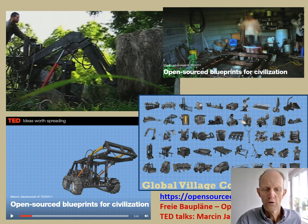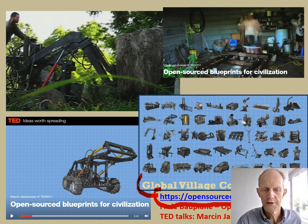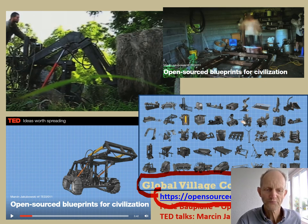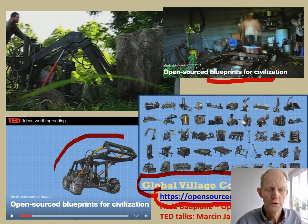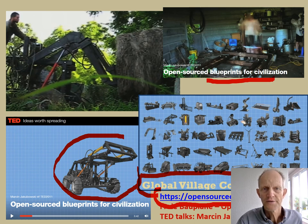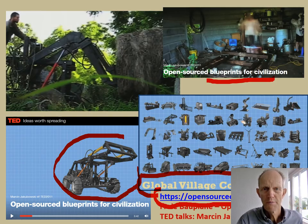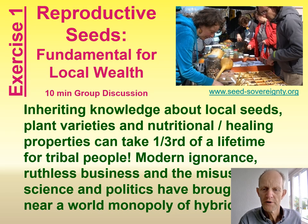There is an organization called Open Source Ecology and they made the Global Village Construction Set — around 50 ways of making things in a normal workshop or garage. Even up to building a small tractor, which in my view should be electric to avoid noise and to allow for regenerating energy.